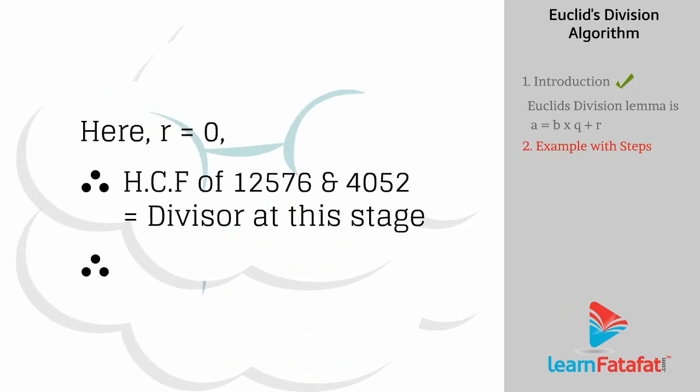Here, R is equal to 0. Therefore, HCF of 12576 and 4052 is equal to the divisor at this stage. Therefore, HCF of 12576 and 4052 is equal to 4.